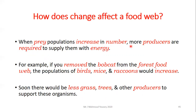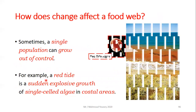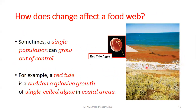When prey populations increase in number, more producers are needed to supply energy. For example, if the bobcat is removed from the forest food web, birds, mice, and raccoons would increase in number. Soon there would be less grass, trees, and other producers to support the ecosystem, and the ecosystem could collapse. Sometimes a single population can grow out of control — this is called a sudden explosive growth, like a red tide.